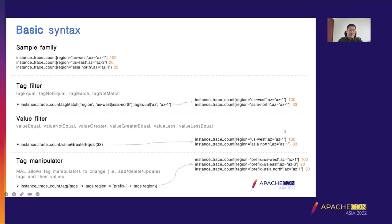The value filter filters metrics according to the metric value. It includes value equal, value not equal, greater, greater equal, less, and less equal. For example, this expression filters for values greater than or equal to 33. The metric with value 20 was dropped.